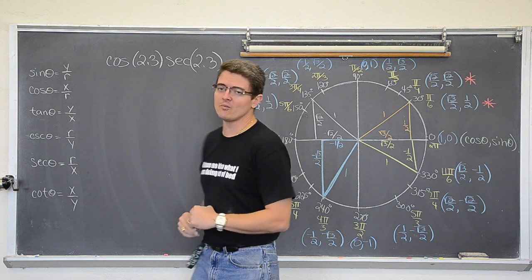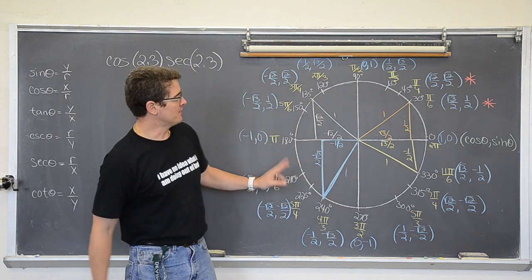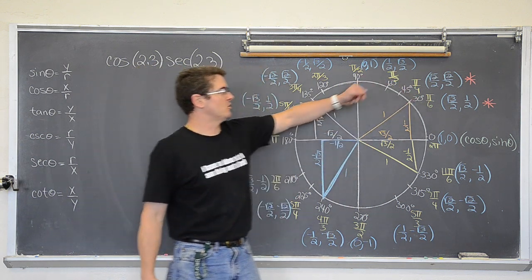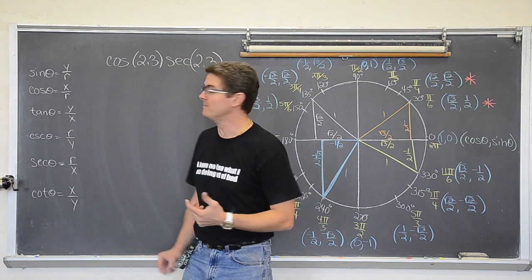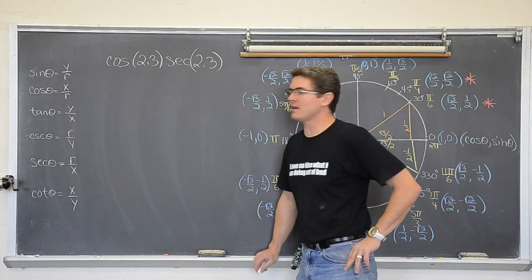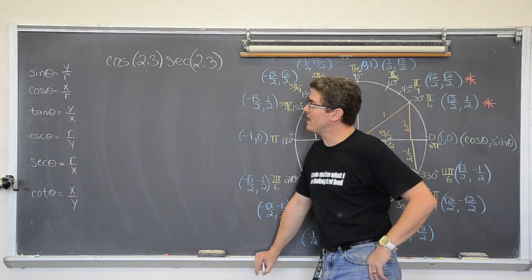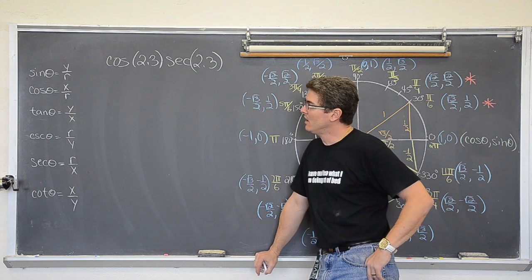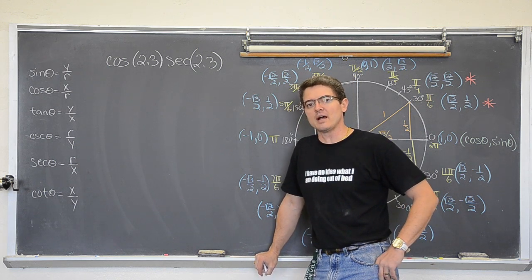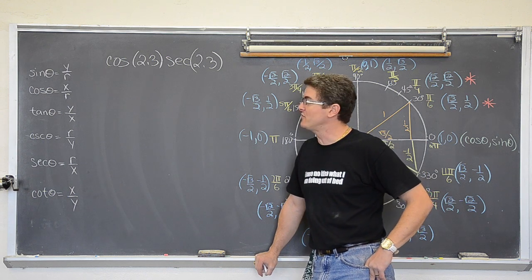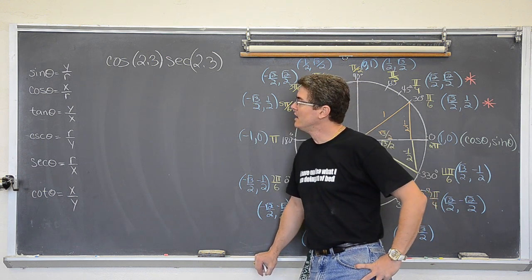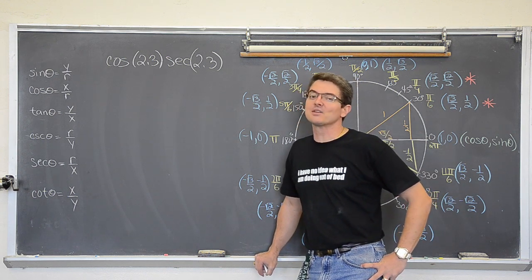Certainly I do not see an angle measure of 2.3 radians on the unit circle. These radians are all exact values — pi over 6, pi over 4, and so on. So how are we supposed to analyze this expression without a calculator? We need to remember the reciprocal identities from the past video. There is a link above my head if you want to click back to it.